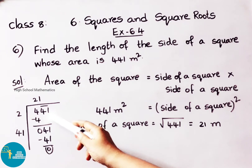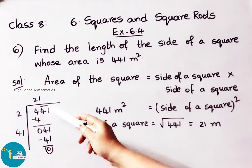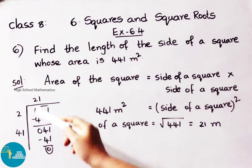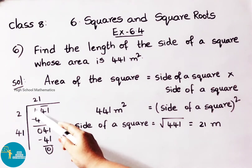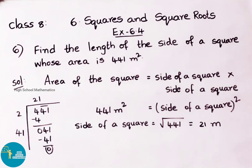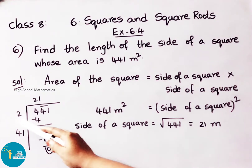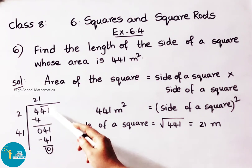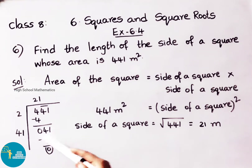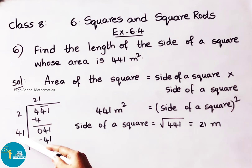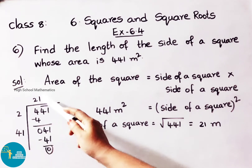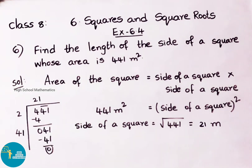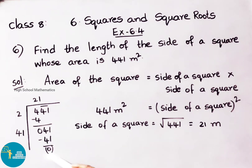First we have written the given number in pairs. The last two digits are written in a pair, with the first digit left over. The first number is 4, so 2 squared equals 4. Write 2, then 4 minus 4 equals 0. Bring down the next pair, 41. Double value of 2 is 4, multiply by 1, so 41 ones are 41. So 41 minus 41 remains 0.